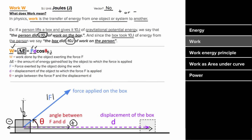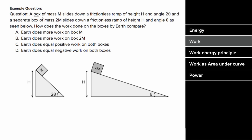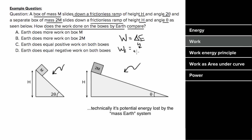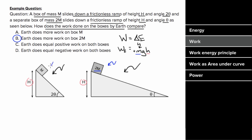If the force on an object is perpendicular to the motion, that force does zero work — it neither gives the object energy nor takes it away. For an example: a box of mass m slides down a frictionless ramp of height h and angle two-theta, and a separate box of mass 2m slides down another frictionless ramp of height h and angle theta. How does the work done by the Earth compare for each case? The easiest way is by finding the change in energy. The work done by the Earth equals positive mgh. Both heights are the same, but one box has twice the mass, so the work done by gravity on mass 2m is going to be twice as great as the work done on mass m.